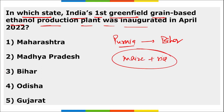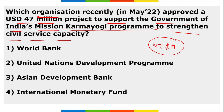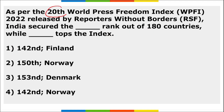The World Bank approved a $47 million project to support the Government of India's Mission Karmayogi program to strengthen civil service capacity. This loan is from IBRD — the International Bank for Reconstruction and Development — which is a branch of the World Bank.